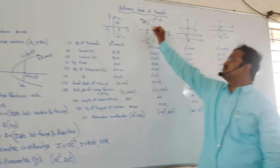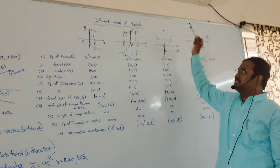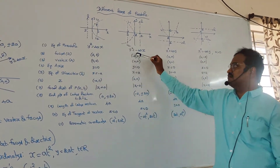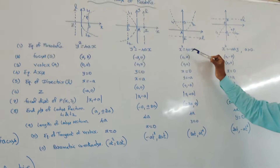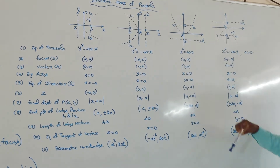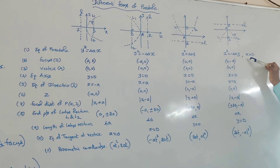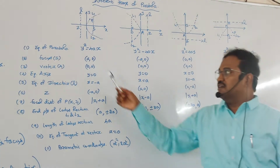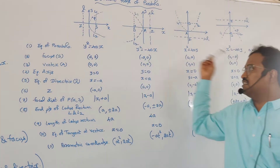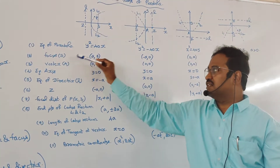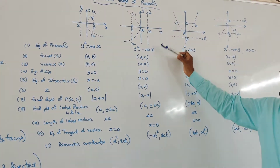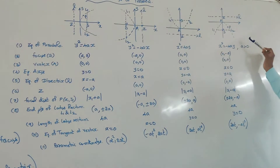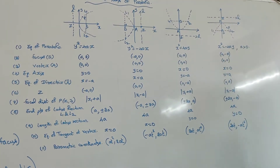Next, the different standard forms of the parabola. The four forms are: y² = 4Ax, y² = −4Ax, x² = 4Ay, and x² = −4Ay, where A > 0. The focus for each: for the first, (A, 0); second, (−A, 0); third, (0, A); fourth, (0, −A).